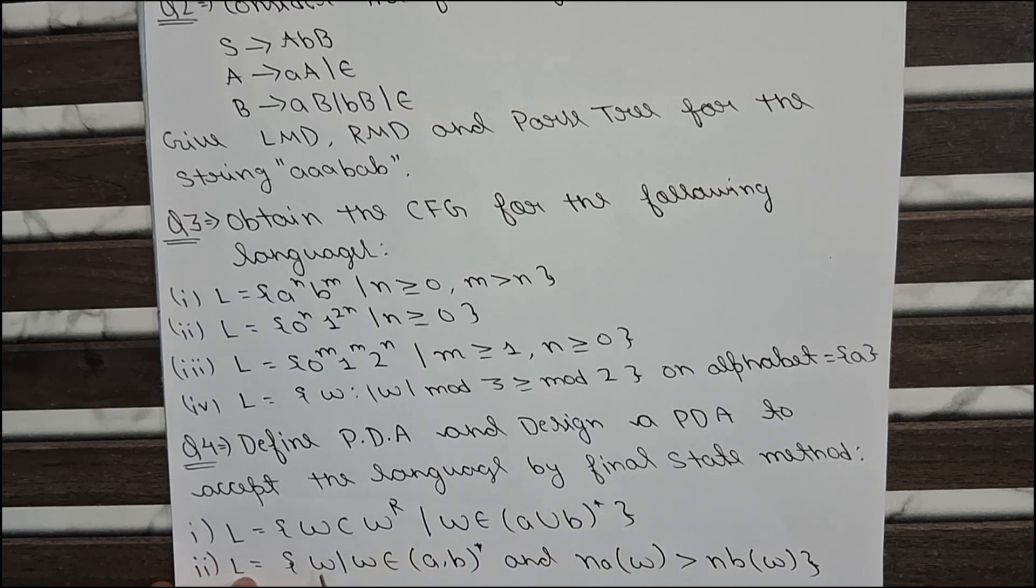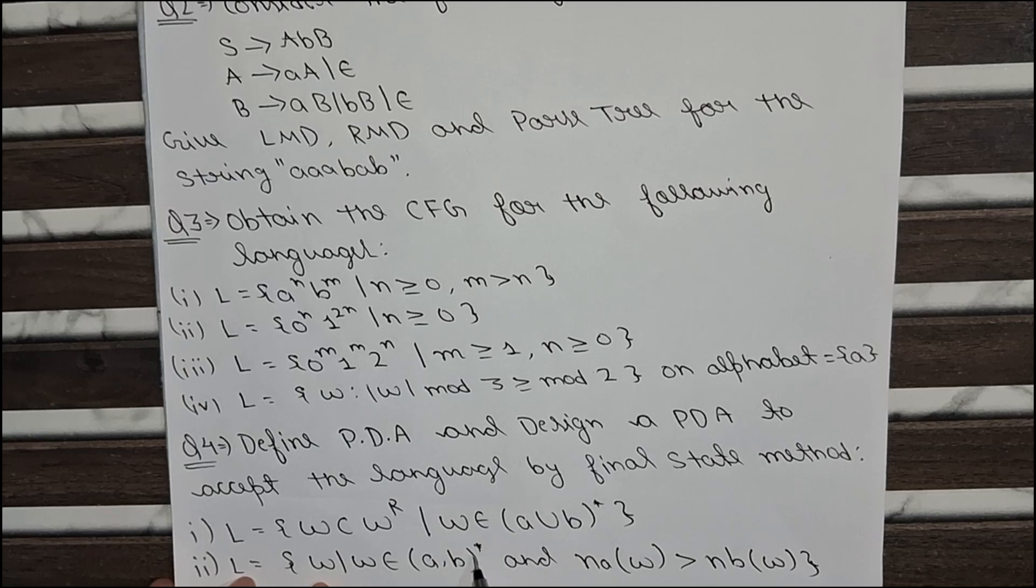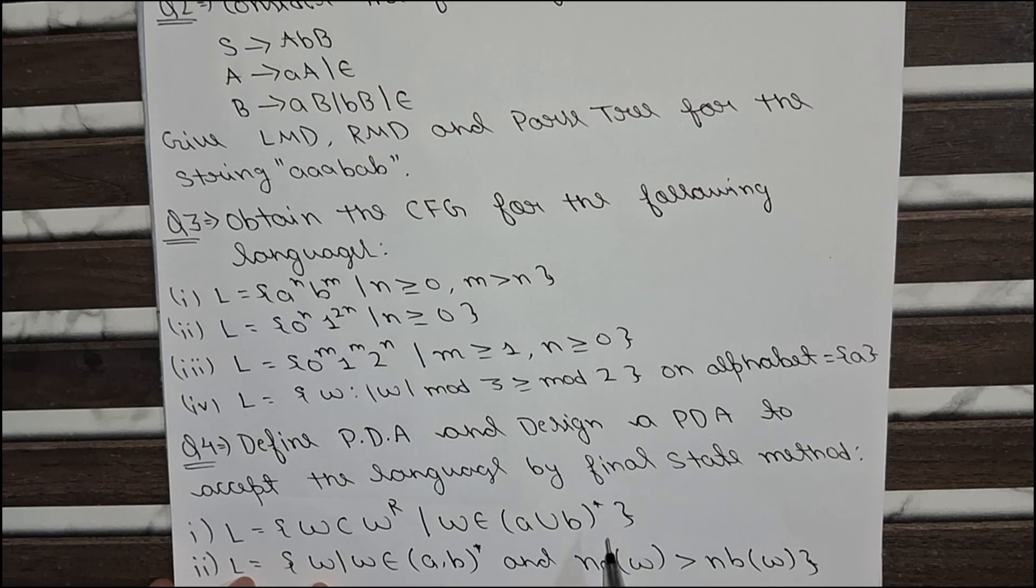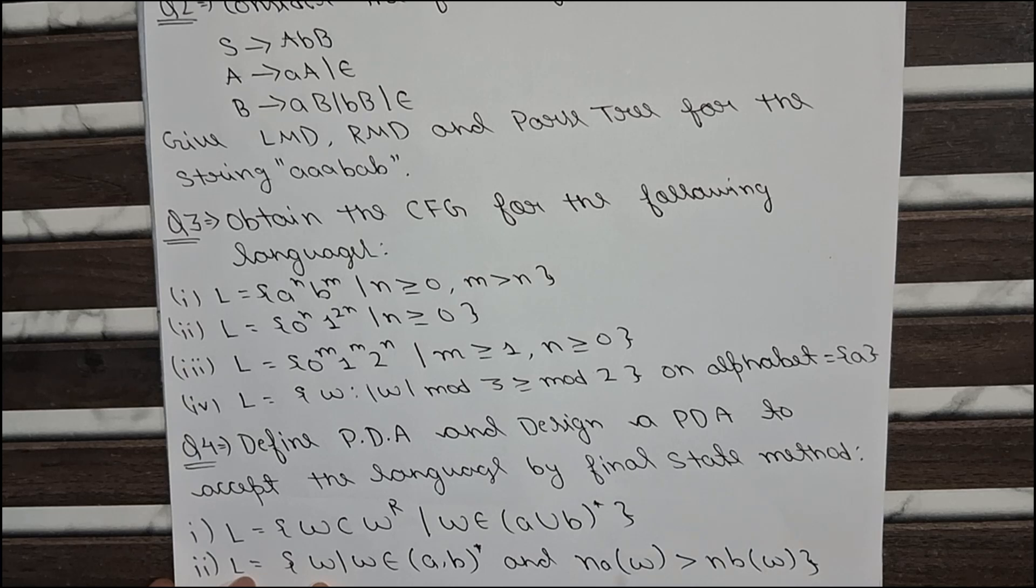And the second language is W such that W belongs to A comma B to the whole asterisk and number of A's of the string W is greater than number of B's. And also in the question it can ask that number of B's is greater than the number of A's. So in the PDA the answer will be changed in the last step only. I already made the video on these questions, so you can check that.